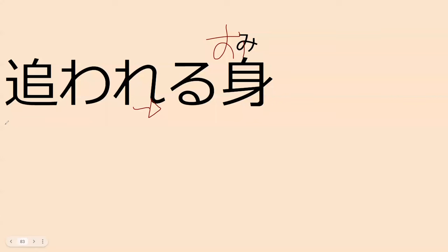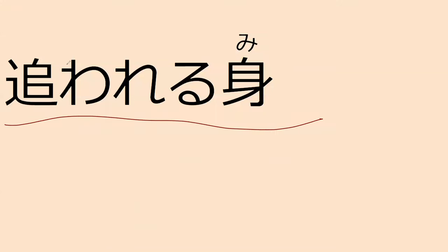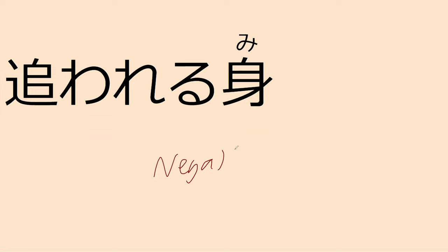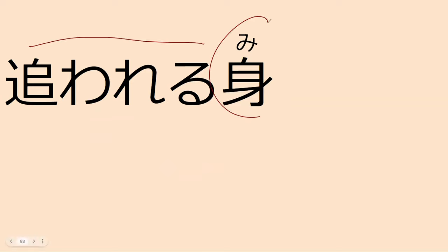This kanji shows up in this word — can you read it? Owaremono. Owaremono is a noun that means 'a wanted person' — like to be a wanted person. This is person, and this is to be wanted. Owaremono — to be a wanted person in a negative, criminal sense. No one wants to be wanted this way, but it typically means a person who is being chased.